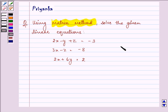The linear equations given are: 2x minus y plus z equals minus 3, 3x minus z equals minus 8, and 2x plus 6y equals 2.